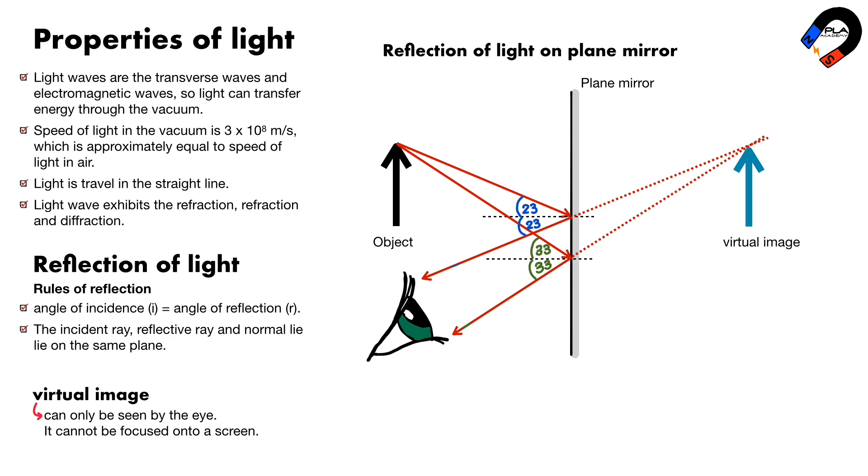Which is why it is virtual. The characteristics of the virtual image: The image is as far behind the mirror as the object is in front. The image is the same size as the object.